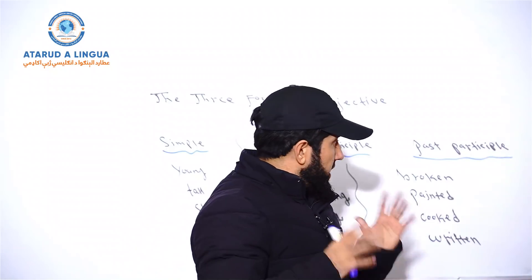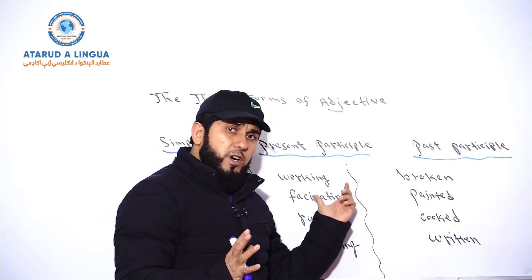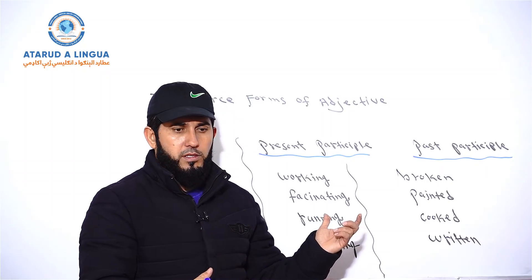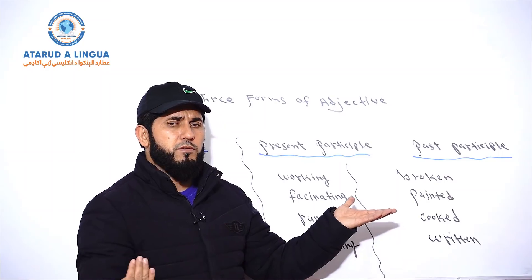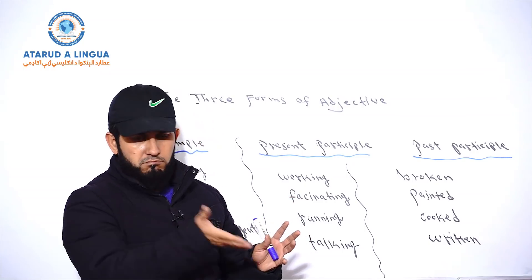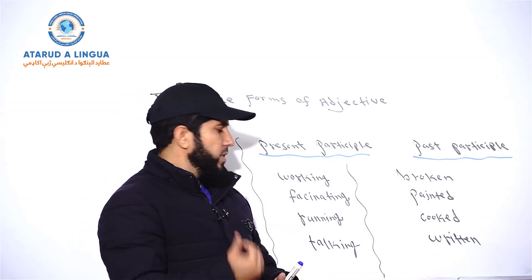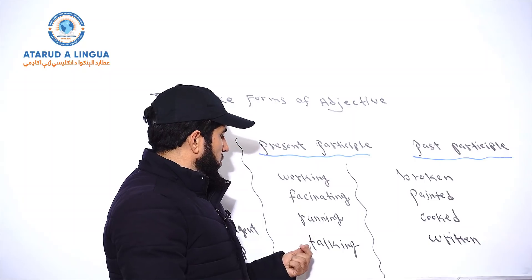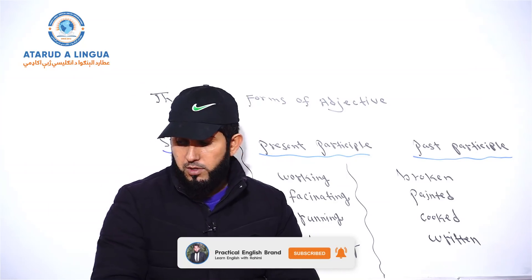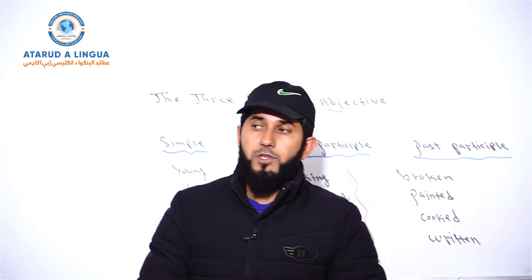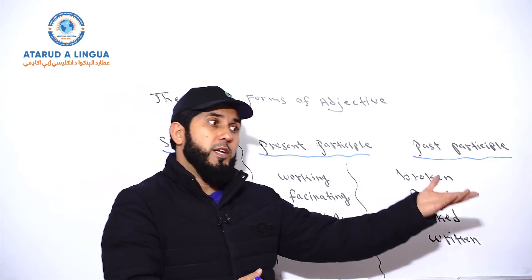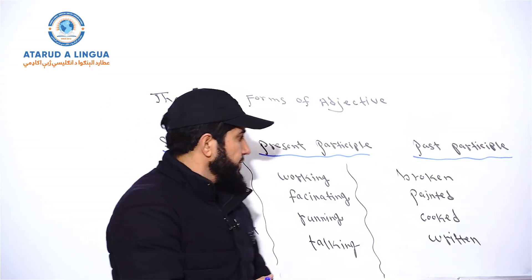Keep in mind that when verb -ing shows the action of a subject, it is not used as an adjective — it is used as a main verb in continuous tenses. But when it modifies a noun or pronoun, it is used as a present participle adjective. For example, 'that is a running dog' — what kind of dog? A running dog. 'What are your working hours?' 'This is an interesting class' — what kind of class? An interesting class. 'There is a fascinating place' — it means that place fascinates people.